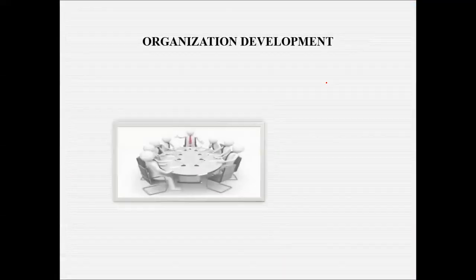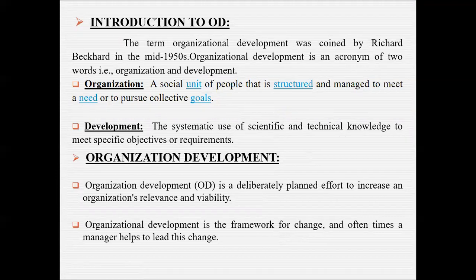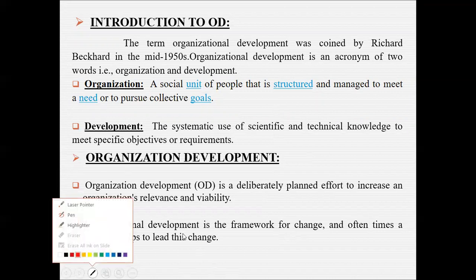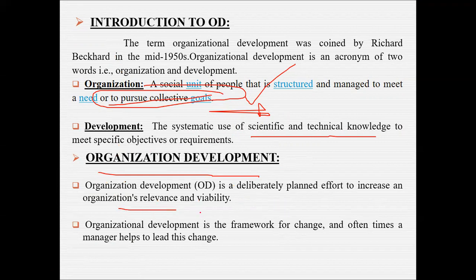Now let's start with the concept of OD, that is organizational development. What do we mean by the term organizational development? The term was first coined by Richard Beckett in the mid-1950s. Organizational development is an acronym made up of two words: organization and development. An organization is a social unit of people structured and managed to meet a need or pursue collective goals. Development refers to the systematic use of scientific and technical knowledge to meet specific objectives.